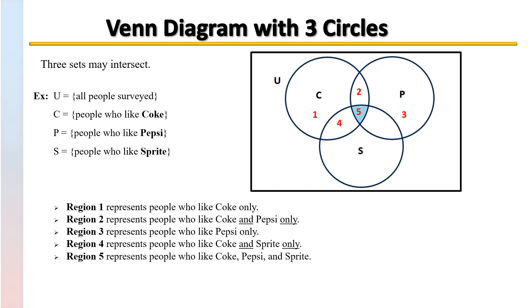Region 5 represents people that like all three. They like Coke, they like Pepsi, and they like Sprite.